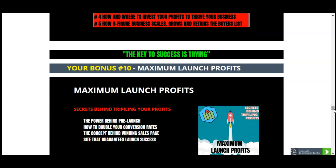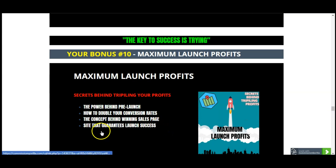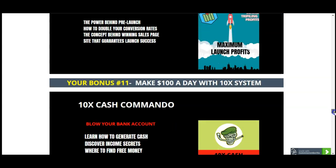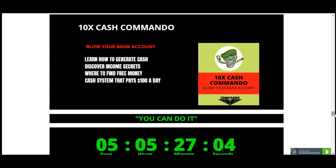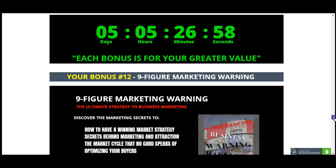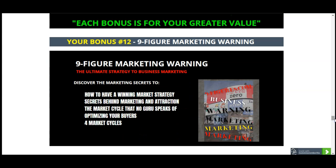Your bonus number ten covers the power of pre-launch — how to double your conversion rates, the concept behind a winning sales page, and sites that guarantee launch success. Your bonus number eleven allows you to make $100 a day with a 10x system — learn how to generate cash, discover income secrets, where to find free money, and a cash system that pays you $100 a day. Your bonus number twelve is Nine Figure Marketing Warning, all about marketing strategies, secrets behind marketing attraction, and the full marketing cycle you need to know.